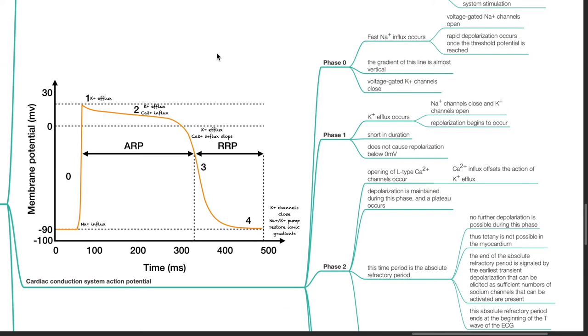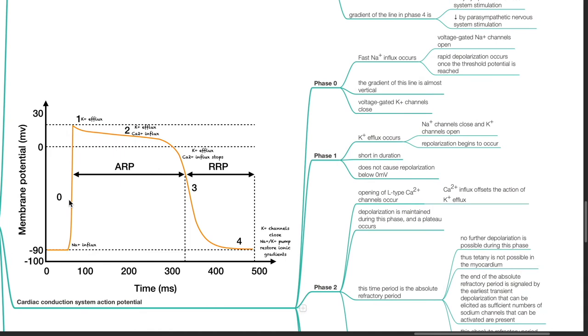Next is the cardiac conduction system action potential. There are 5 phases: phases 0, 1, 2, 3, and 4. During phase 0, fast sodium influx occurs as voltage-gated sodium channels open. Rapid depolarization occurs once the threshold potential is reached. The gradient of this line is almost vertical. Voltage-gated potassium channels close.